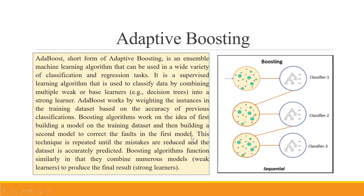Let's understand this concept. The data is fitted to the first classifier — which can be a decision tree. Then the errors are identified in the first classifier. Again the data is fitted into the second classifier, and the errors of the first classifier are rectified by the second classifier. The data is then fitted to a third classifier, and the errors of the second classifier are rectified.